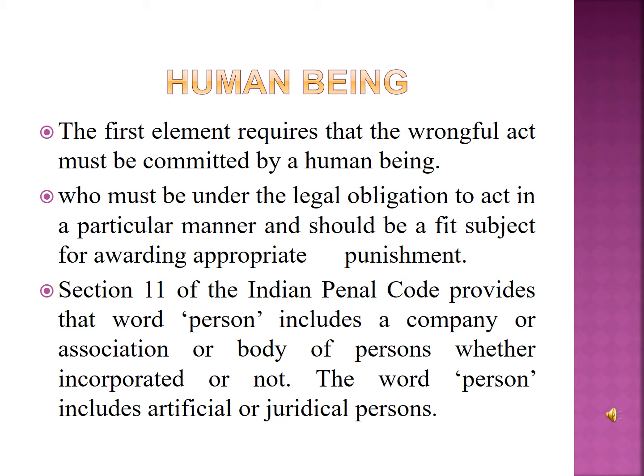So the first element of crime is human being, who must be under the legal obligation to act in a particular manner and should be a fit subject for awarding appropriate punishment. Section 11 of IPC provides that the word 'person' includes a company or association or body of persons whether incorporated or not. The word person includes artificial or juridical person — a legal entity created by law which is not a natural person, such as a corporation created under state statutes, having a distinct identity and legal rights and obligations under the law.